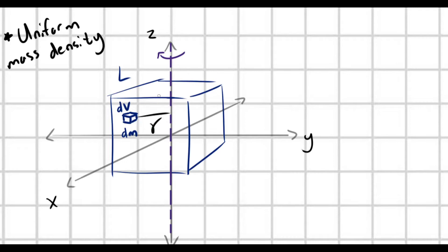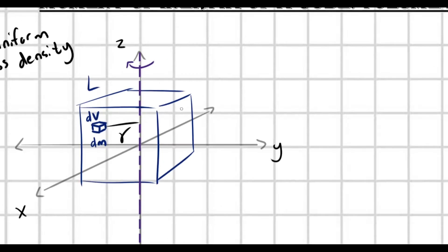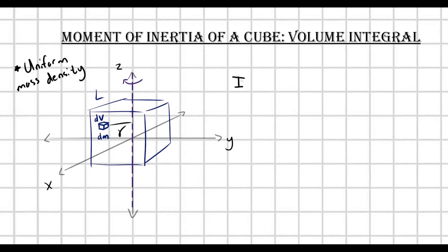I'm going to denote this perpendicular distance with gamma. So the moment of inertia is defined as the integral over this cube of gamma squared dm, where gamma is the shortest distance from the axis of rotation. Now, in order to actually use this integral, we need to convert this into a volume integral with some definite bounds that we can actually integrate over. So we need to manipulate this dm a little bit, by recalling our definition of mass density.